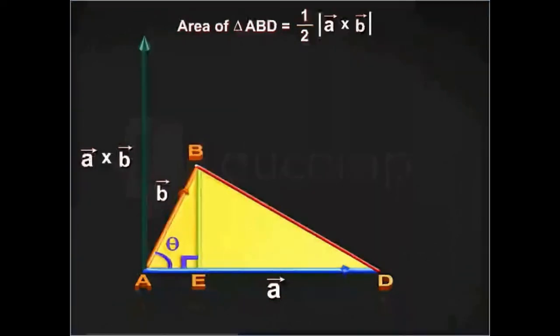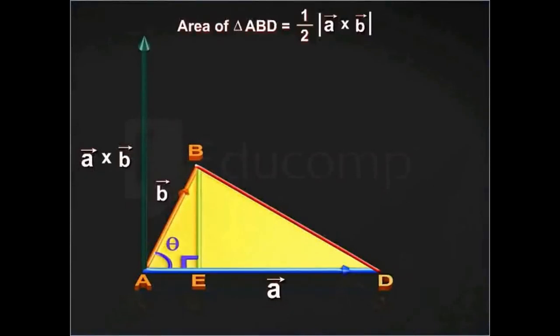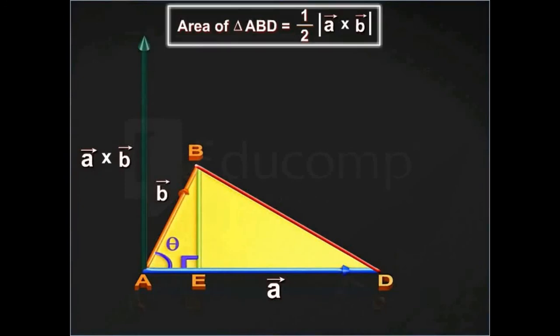This helps us to generalize that if vector A and vector B represent the adjacent sides of a triangle, then its area is half into magnitude of vector A cross vector B.